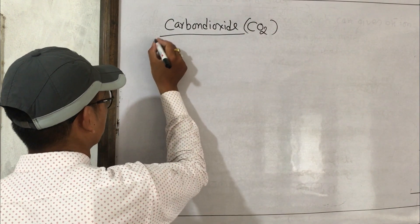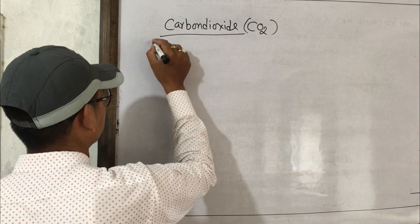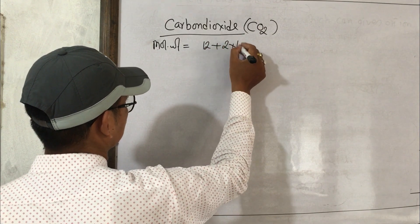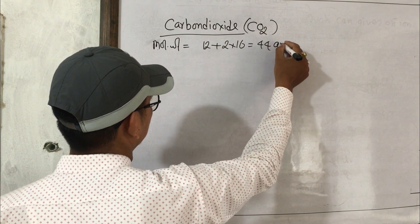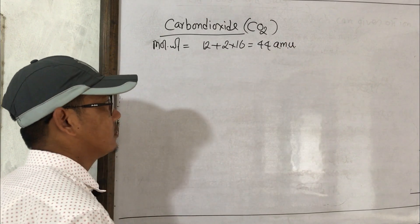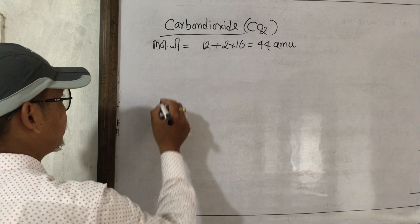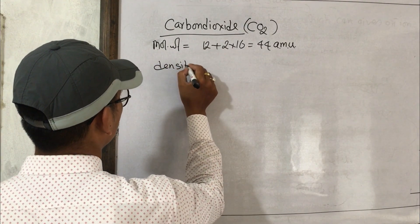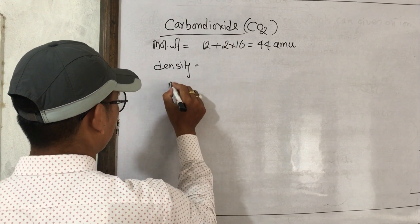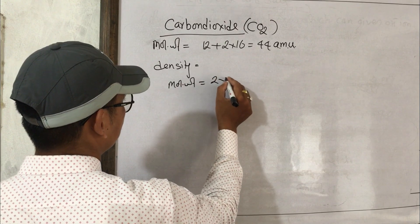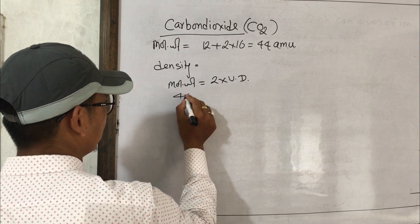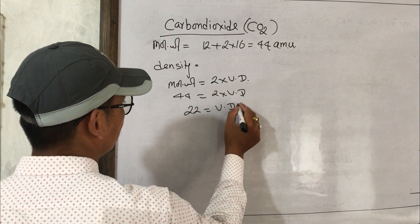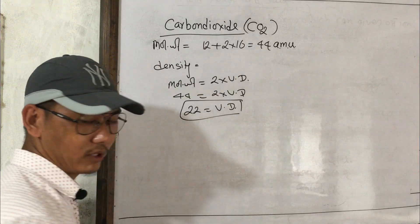The molecular formula of CO2 has molecular weight: carbon plus oxygen and oxygen gives 44 amu. The density formula is: molecular weight is equal to 2 into vapor density. So 44 = 2 into vapor density, giving vapor density of 22. The density of CO2 gas is the same.